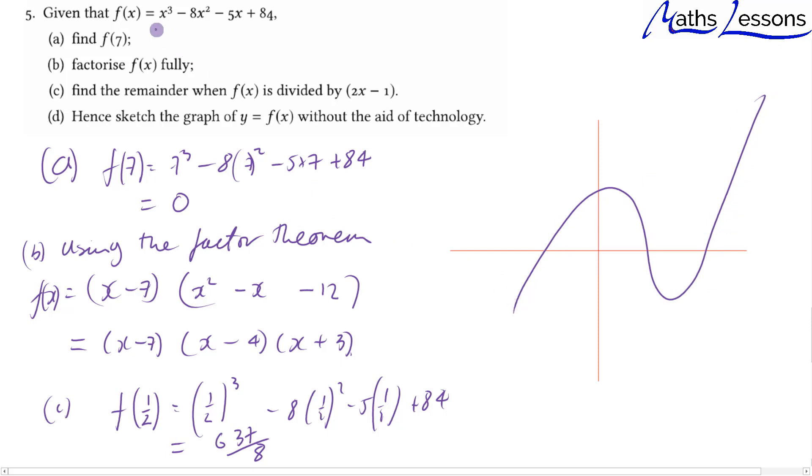Because the x³ coefficient is positive, it starts in the third quadrant and moves up into the first quadrant. It crosses at -3, at 4, and at 7. The y-intercept when x = 0 is 84. That's how we can sketch this curve.